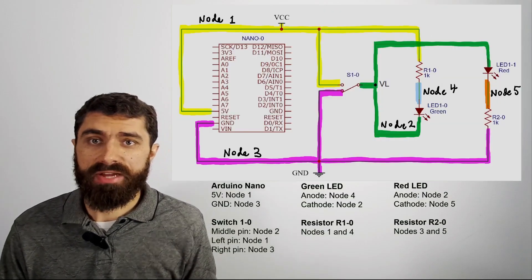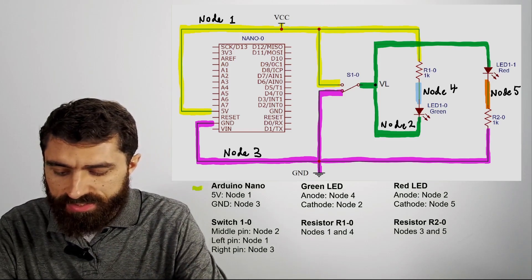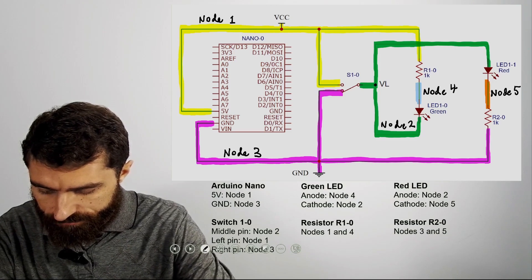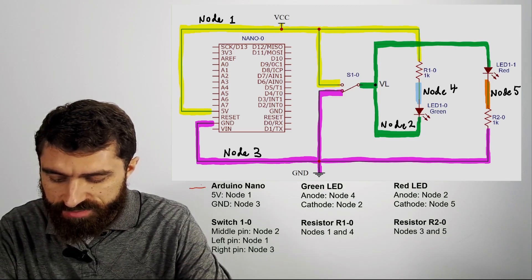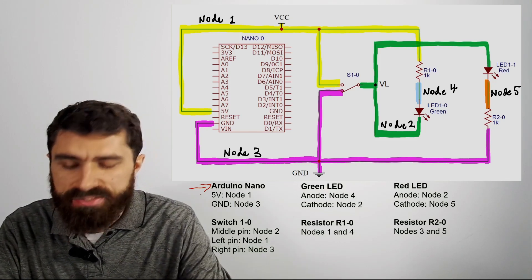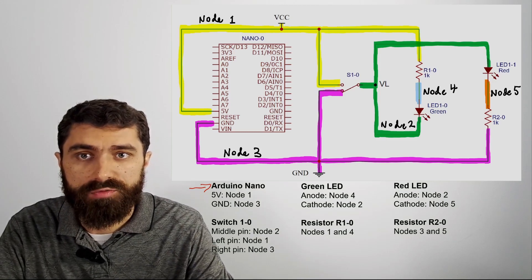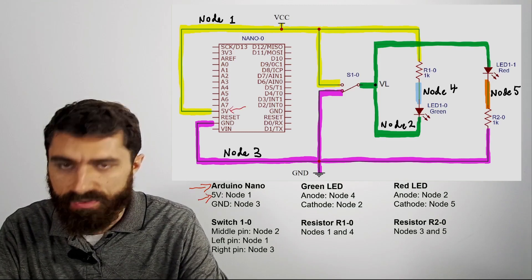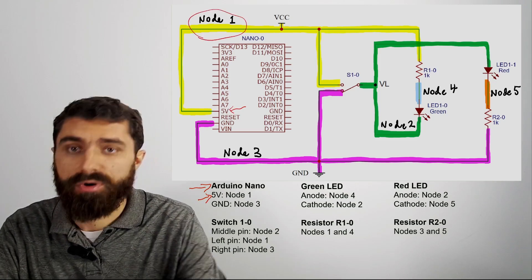So for example, now that you've highlighted all this, go ahead and write down the specific component, each component, like the Arduino Nano, and write down which pins of the Arduino Nano are connected to which nodes. So for example, the five volt pin here is connected, you can see, to node one.